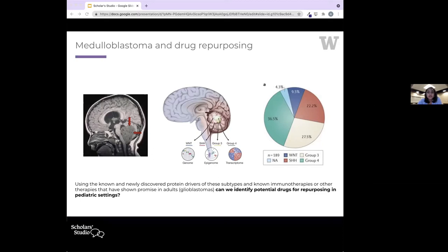In the middle figure, you can see there are four different types of medulloblastoma, with group 3 and 4 being the most common and the least characterized, and have the highest mortality rates.